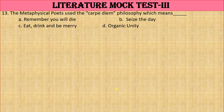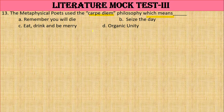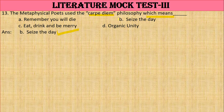Question 13: The metaphysical poets use the carpe diem philosophy. What is the meaning of carpe diem? Options: A. Remember you will die; B. Seize the day; C. Eat, drink and be merry; D. Organic unity. The right answer is B — 'Seize the day'. This is a distinct philosophy used by the metaphysical poets in the 17th century.